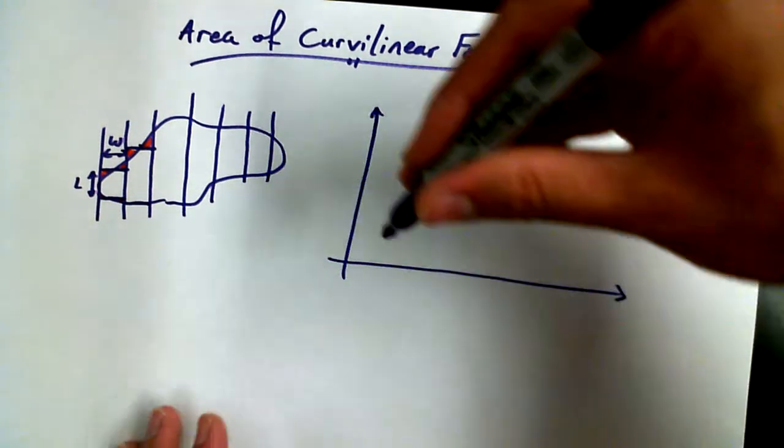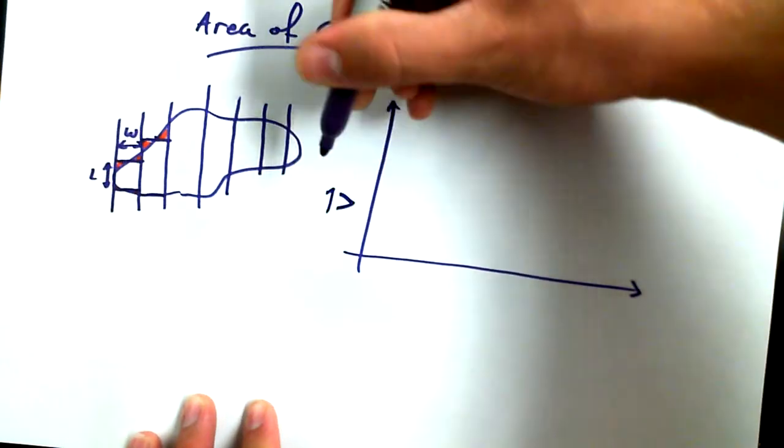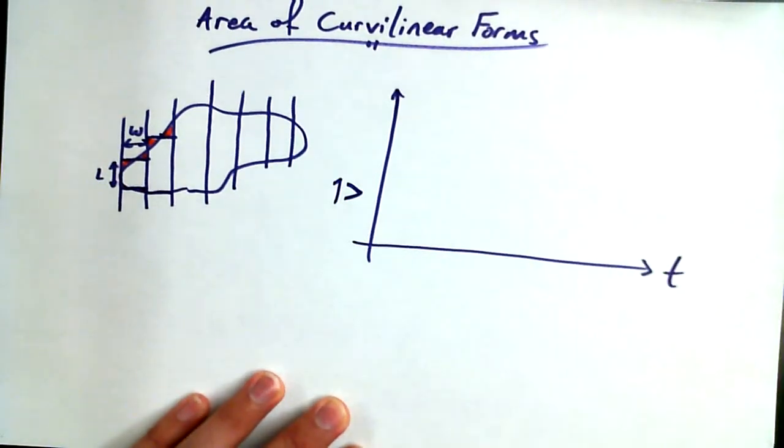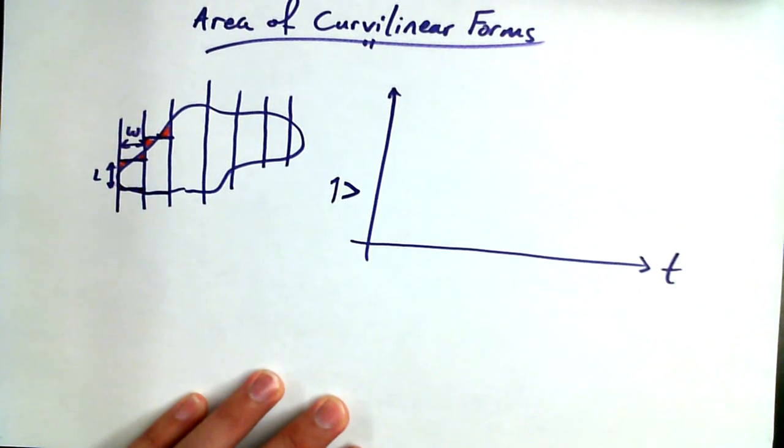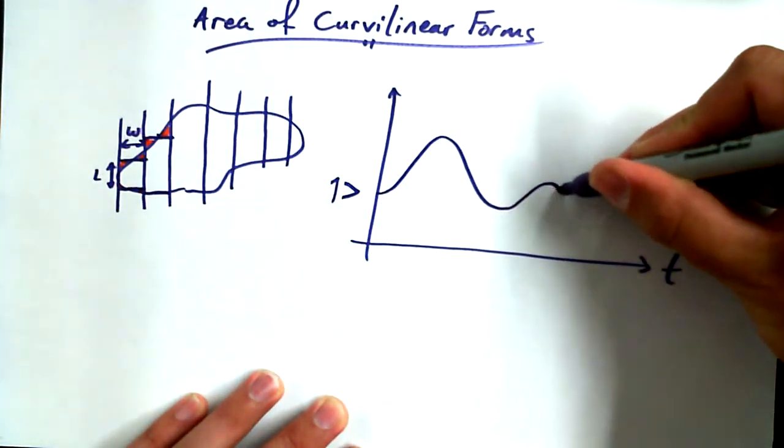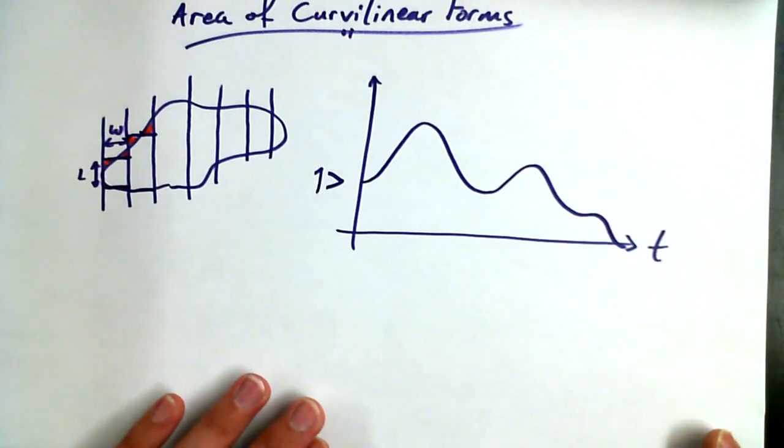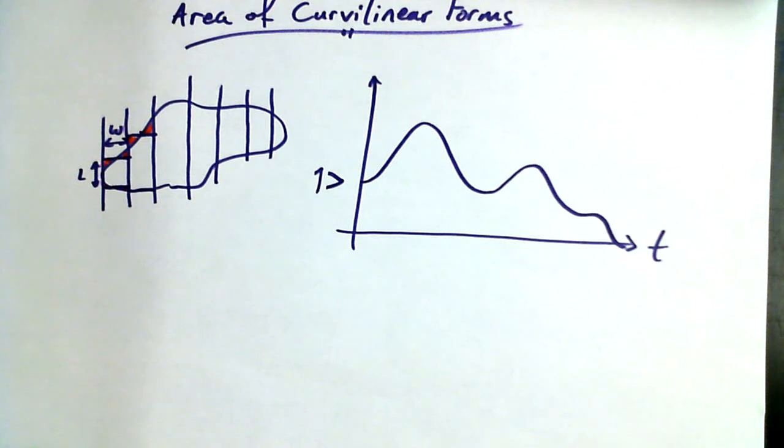If I happen to have something like a velocity time graph, there's a V with an arrow over top of it, and this velocity time graph is a curvilinear graph, something like this. Heaven forbid I ever get a graph that looks like this. But if I did get a VT graph that looked like this, and I wanted to know what the displacement for this sucker was.